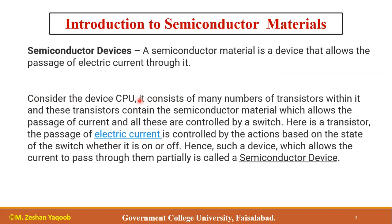Consider the CPU — the central processing unit of a computer. It consists of many transistors, and these transistors contain semiconductor material, which allows the passage of current, all controlled by switches. In a transistor, the passage of electronic current is controlled based on the state of a switch, whether it is on or off. Such a device which allows current to pass through it in a controlled manner is called a semiconductor device.